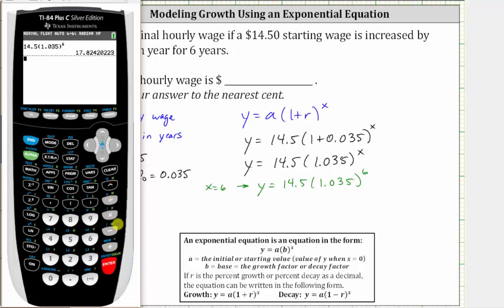Enter. And we're told to round to the nearest cent, which would be to the hundredths place value. Notice how we have a four in the third decimal place, which means you round down, and therefore the wage is approximately $17.82.